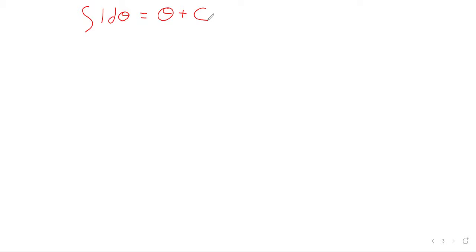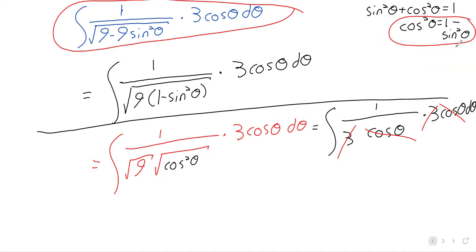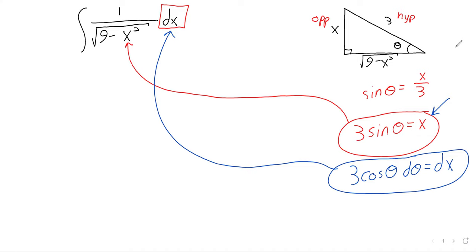As with u-substitution, we got a variable other than our original variable — we got theta. We need to go back to our original variable. In u-substitution, it's easy: you just plug back in what u equals. With trigonometric substitution it can be trickier — nowhere on this do I have a statement theta equals something. In this particular case, though, I can find that theta is an arc sine.